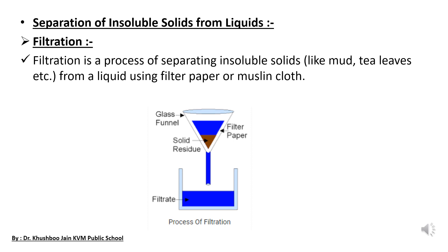You can see in the diagram — we have a mixture of water and sand. We use a funnel and place filter paper inside it. Filter paper is a kind of paper which is very fine and dense, so the liquid will easily pass through it while the solid particles are retained.